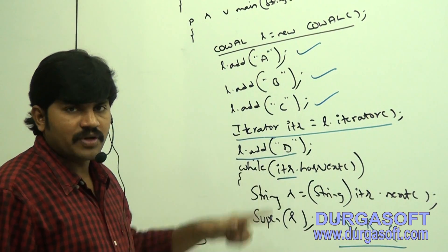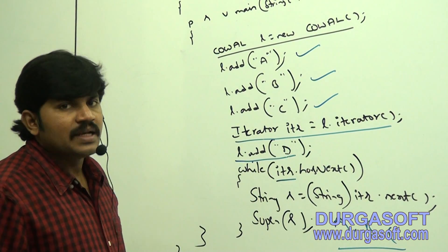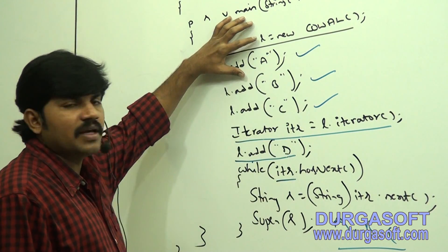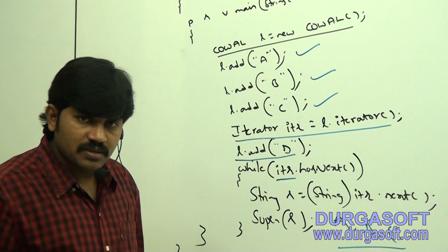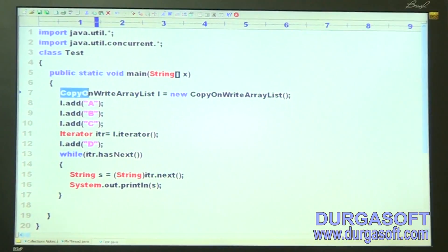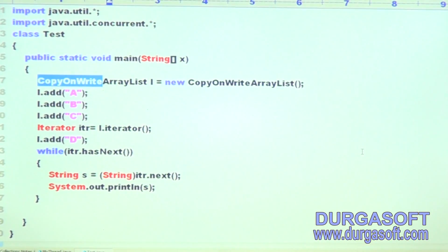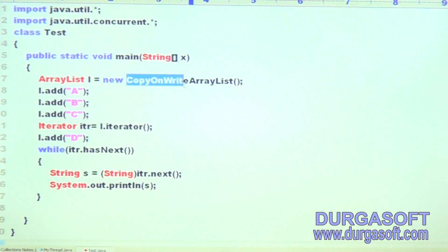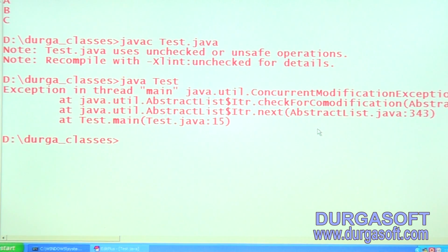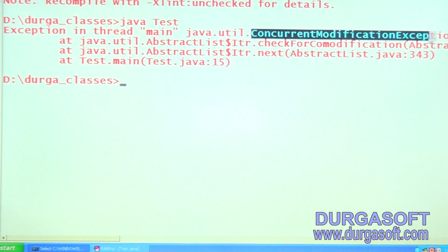If you are trying to modify, what will happen? Immediately, ConcurrentModificationException you are going to get. If I replace CopyOnWriteArrayList with a normal ArrayList, ConcurrentModificationException by default you are going to get. Look at this, let me show that also, so that you people can be aware. I am replacing CopyOnWriteArrayList with a normal ArrayList object. Now observe that, what answer by default I am getting? Have you observed? ConcurrentModificationException by default we are getting.